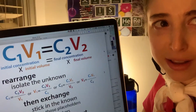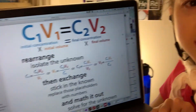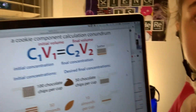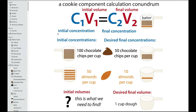Things can be kind of intimidating when we look at numbers and subscripts, so let's talk about it in terms of cookies. Just a quick note — you might also see it as CIVI equals CFVF, where I is for initial and F is for final instead of 1 and 2. Either way works, and sometimes the numbered notation is helpful because with serial dilutions your 2 can become your 1 — it might not be your actual final.